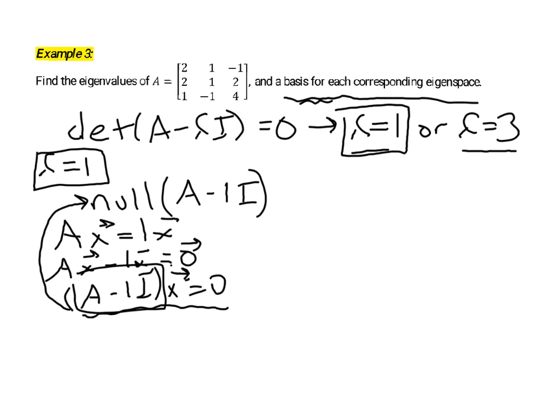Now the A minus, in this case 1 times I matrix, here's the matrix A, 2, 1, negative 1, 2, 1, 2, 1, negative 1, 4. And in this case, we're subtracting 1 times the identity matrix of the same size, so a 3 by 3 identity matrix.